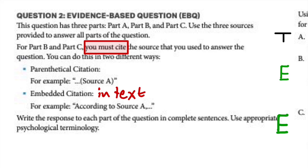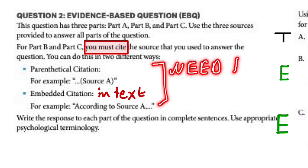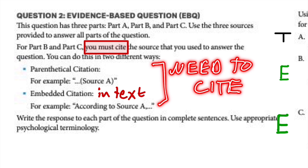For example: 'candy makes kids more hyperactive.' If you don't cite, you don't get the points. The scoring guidelines state that students need to source the document. If you don't have that citation there, even if you're correct and accurate, you're not going to get the points.